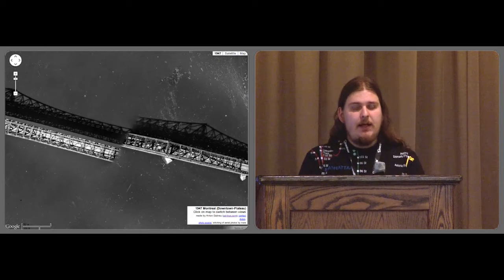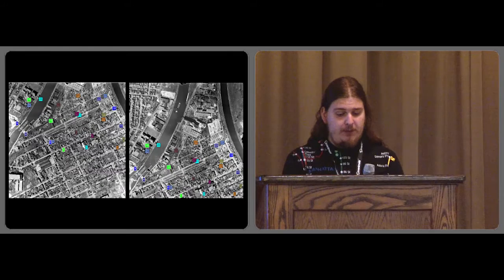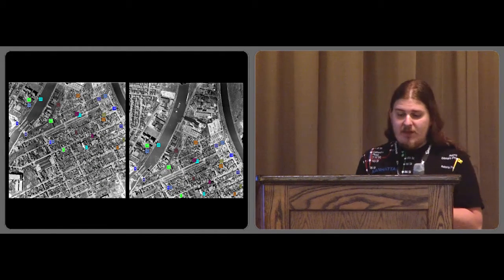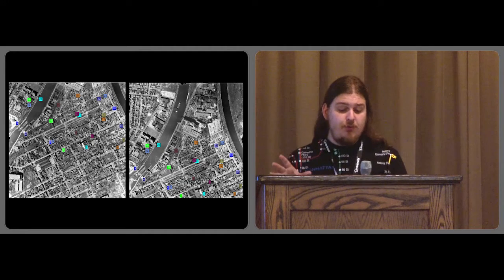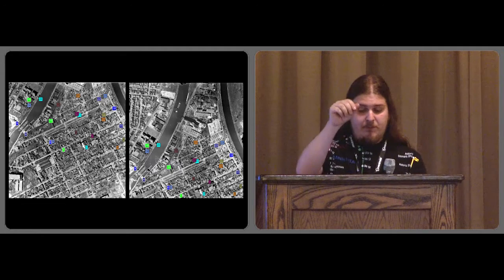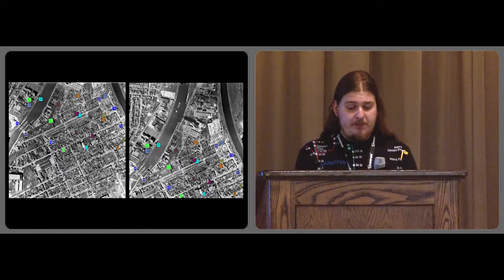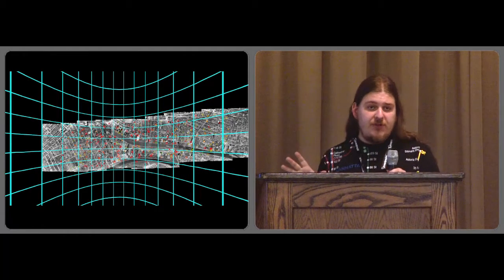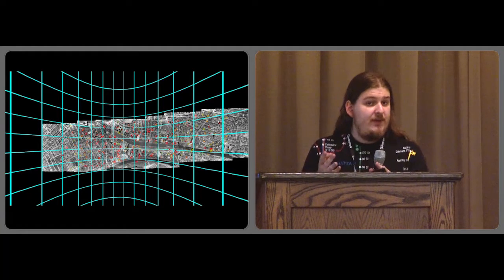So in order to see, to maybe try to improve it, let's look at how stitching software works. So this is an open source software called Hugin. And the way it works, it basically finds reference points between adjacent images, and says, this point matches to that point. So it finds these automatically using vision algorithms. And then it tries to solve a problem of aligning all these images and positioning them and projecting them in such a way as to minimize the errors between the points that should be the same point.